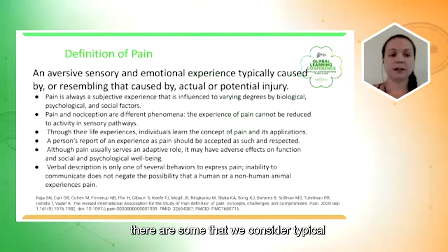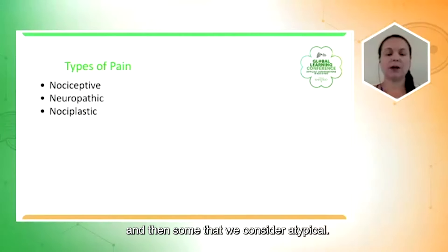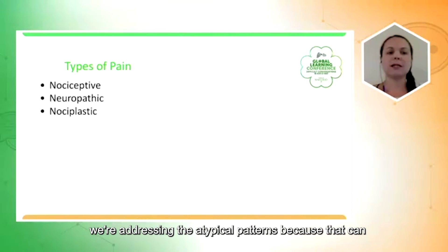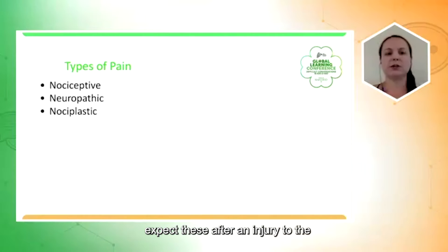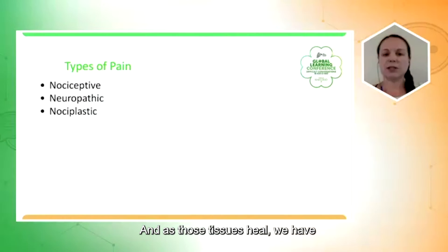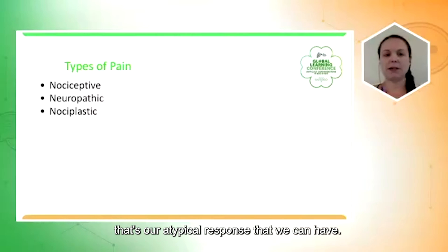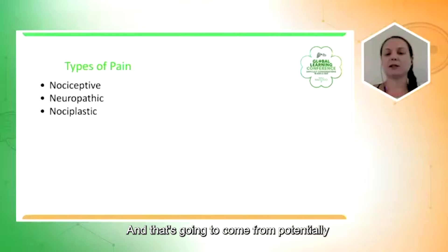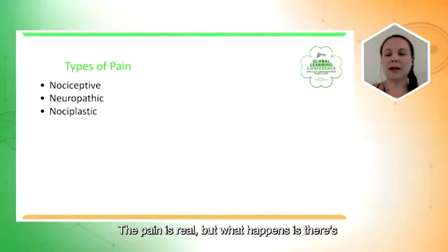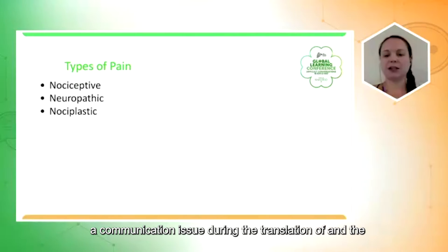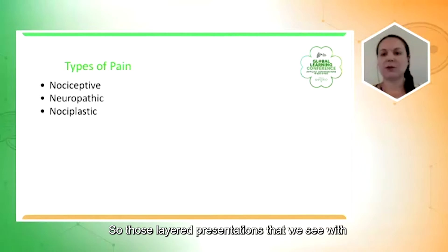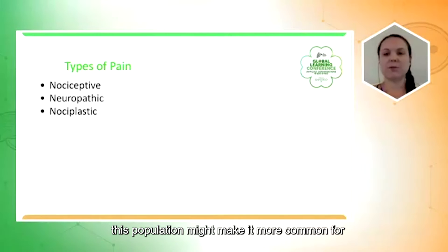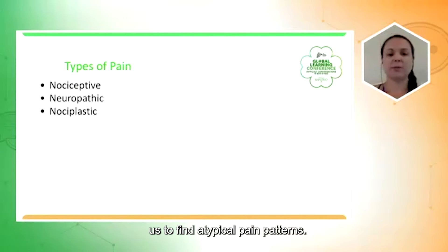There are different types of pain — some typical and some atypical. Nociceptive and neuropathic pain are expected after injury to the orthopedic or neurological system, and as those tissues heal, we see resolution of pain. However, nociplastic pain is our atypical response — it comes from changes in the pain system itself. The pain is real, but there's a communication issue in the translation and perception of what's happening in the body. This typically happens with an underlying disease or condition, making atypical pain patterns more common in this population.